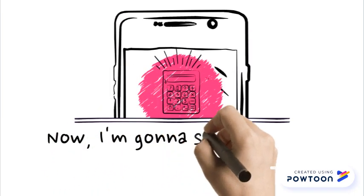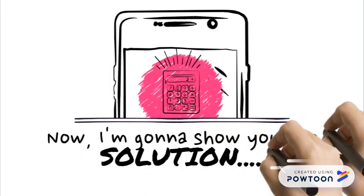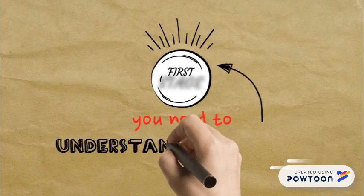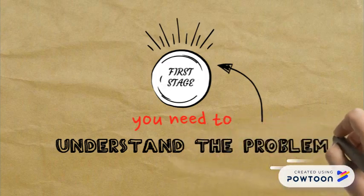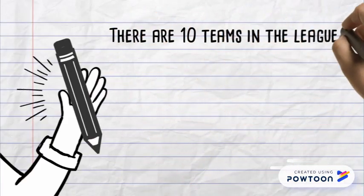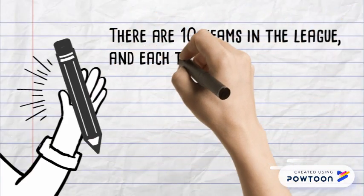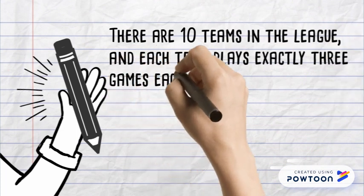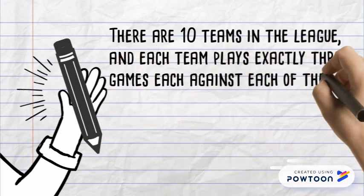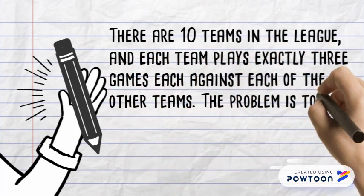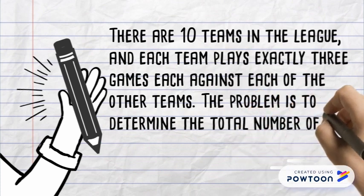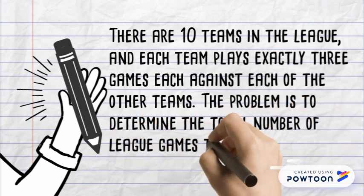Now I'm going to show you the solution. First stage: you need to understand the problem. There are ten teams in the league, and each team plays exactly three games each against each of the other teams. The problem is to determine the total number of league games that will be played.